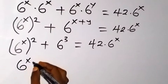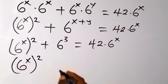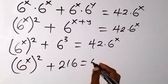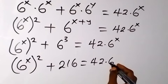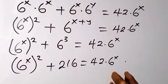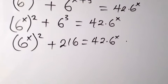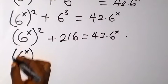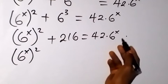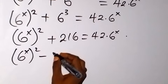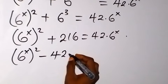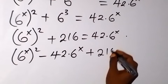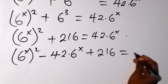So we have 6 raised to the power x, squared, plus 216, equals 42 times 6 raised to the power x. Now let's bring everything to one side to form a quadratic equation: 6 raised to the power x, squared, minus 42 times 6 raised to the power x, plus 216, equals 0.